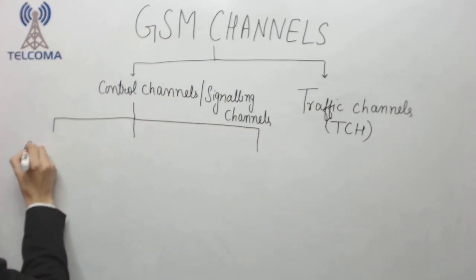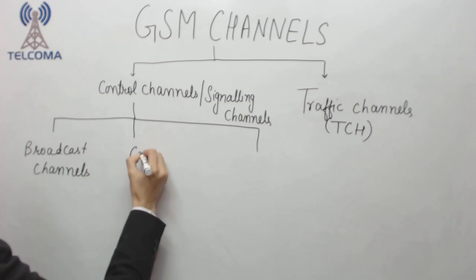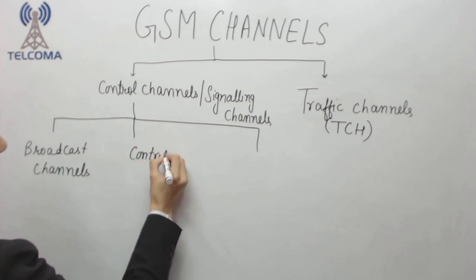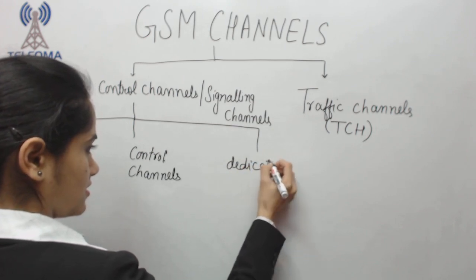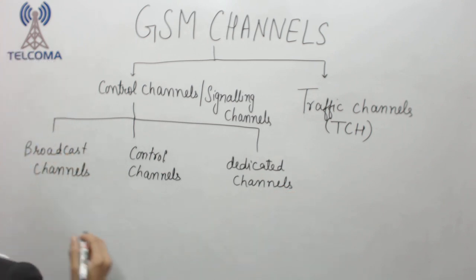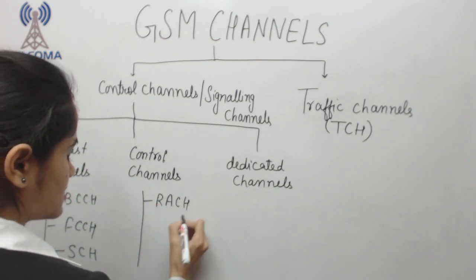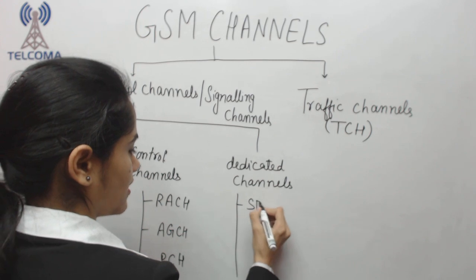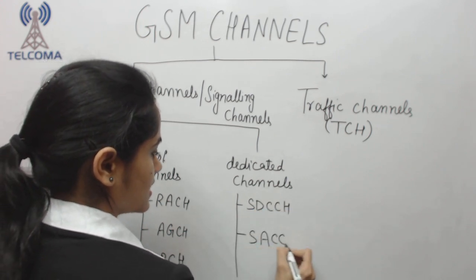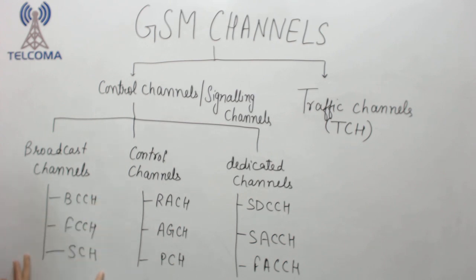Control channels are again divided into three categories: we have broadcast channels, control channels, and dedicated channels. Broadcast channels include BCCH, FCCH, and SCH. Control channels include RACH, AGCH, and PCH, whereas dedicated channels include SDCCH, SACCH, and FACCH. All of these fall under signaling channels which are there for control purposes.